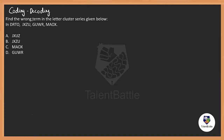Let's read the question: Find the wrong term in the letter cluster series given below. We have four letter clusters — a cluster is a group of alphabets — and we have to find the odd one out. Many students go with the wrong approach of counting alphabets between letters like D and R, R and T, T and O, and so on, which takes a lot of time. We need an easier solution.